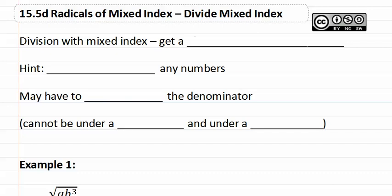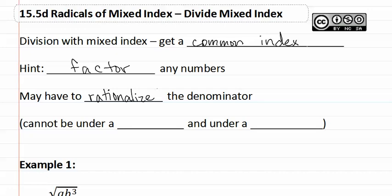When we do division with mixed index, we need to get a common index. As a hint, we will also need to be factoring or finding the prime factorization of any numbers. We may also have to rationalize the denominator, because there cannot be a radical under a fraction.